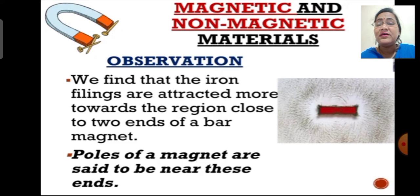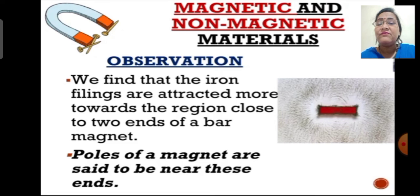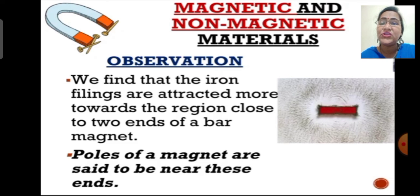But how are these poles located? Try to take a simple bar magnet without any markings on it — that means a bar magnet on which the North Pole and South Pole are not mentioned — and check for the North Pole and South Pole locations using iron fillings. We will do this activity in our next class. Thank you children, I am ending this session. Goodbye.